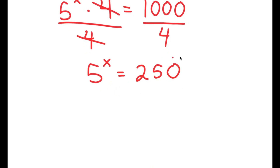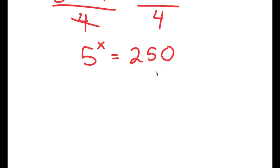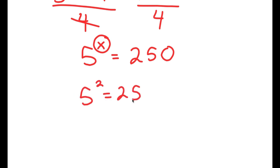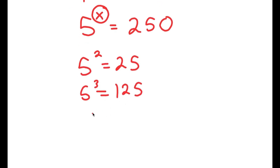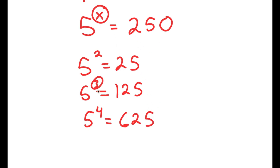So we have 5 to the power of x is equal to 250. And just at first glance of this equation, we can tell that x is not going to be a whole number, because 5 squared is 25, 5 to the power of 3 is 125, and 5 to the power of 4 is 125 times 5, which is 625. So the value of x is somewhere in between 3 and 4.